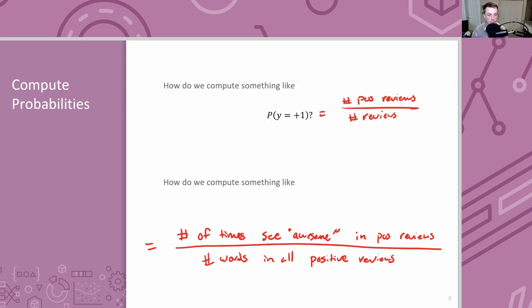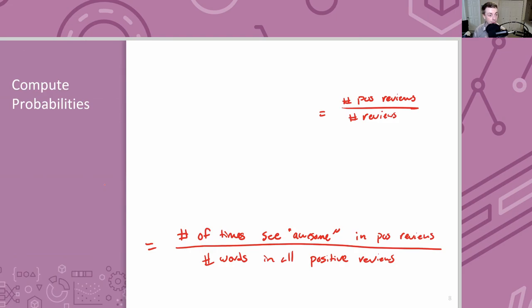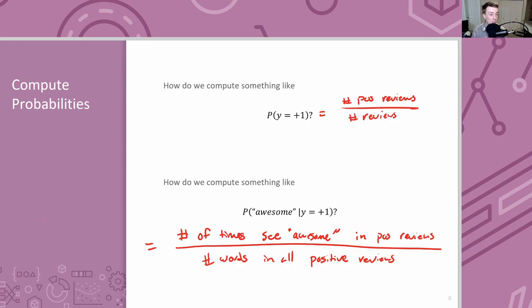Going back to the full picture, Naive Bayes is really just counting and computing fractions. We use Bayes' Rule to flip the conditioning. The probability of positive is just the fraction of positive reviews in the dataset. We use the naive assumption to break the sentence probability into a product of individual word probabilities, each computed as counts from positive reviews divided by total words in positive reviews. That's Naive Bayes — frequencies, fractions, and products.